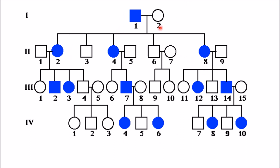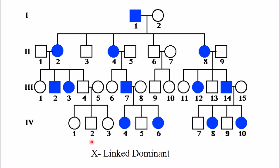In this example, no skipping is seen and every generation is affected, so this is a dominant pattern. Here the father transmits the trait to all his daughters but not to his sons — this is consistent across all generations shown. Remember: if a father transmits to his daughters but not to his sons, it is an X-linked dominant pattern of inheritance.